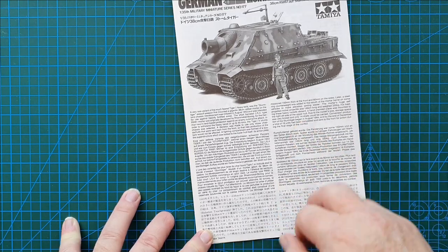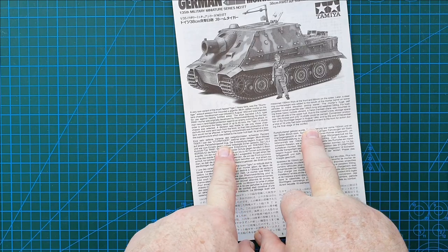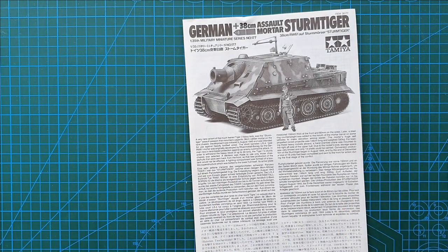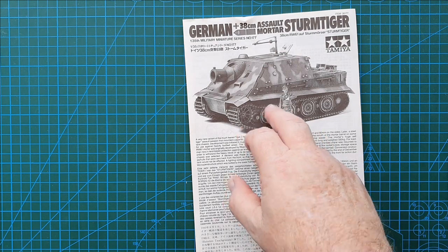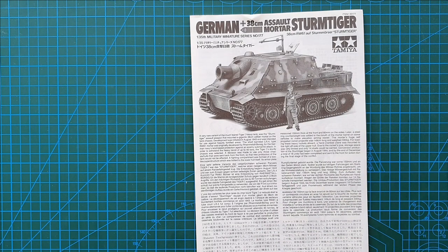This is a brief history with specifications for the Sturmtiger itself. How many shells it could carry, which is literally only 14, and what it was used for. This vehicle was designed to destroy bunkers and other heavy emplacements. This thing could probably level an entire city block. They used at least one of these in the Warsaw Uprising. I've seen film on YouTube of one firing rockets into Warsaw.